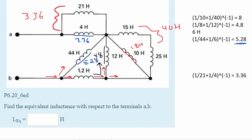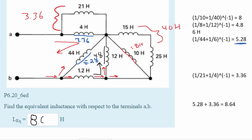All we have to do now is add them together, because if we run current through here we can see they are in series. If we do that we get 8.64 Henrys as our answer to this problem. That is how you deal with inductors in series and in parallel.